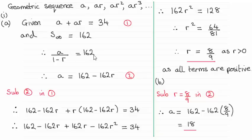And we were asked to work out the first term of the sequence and the common ratio. Well the common ratio turns out to be 8 ninths and the first term turns out to be 18.